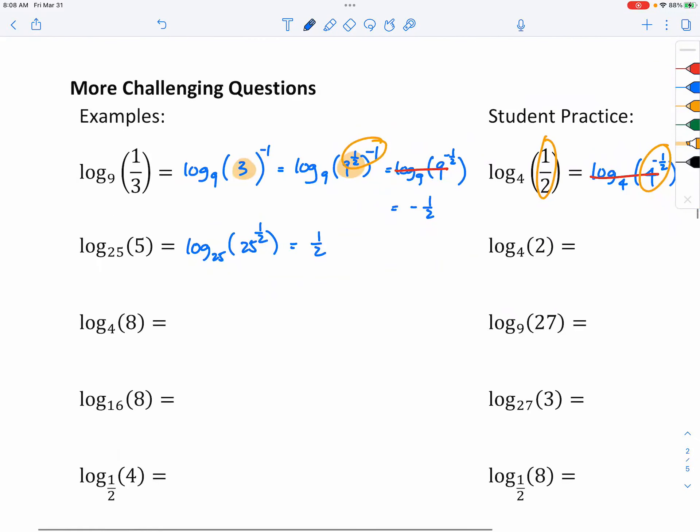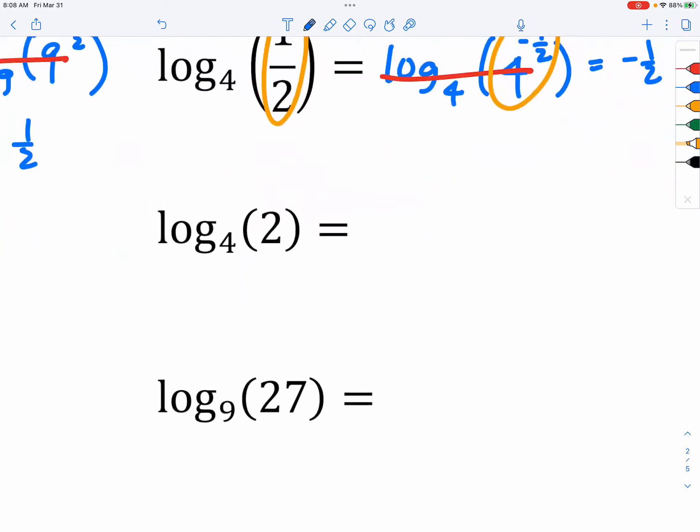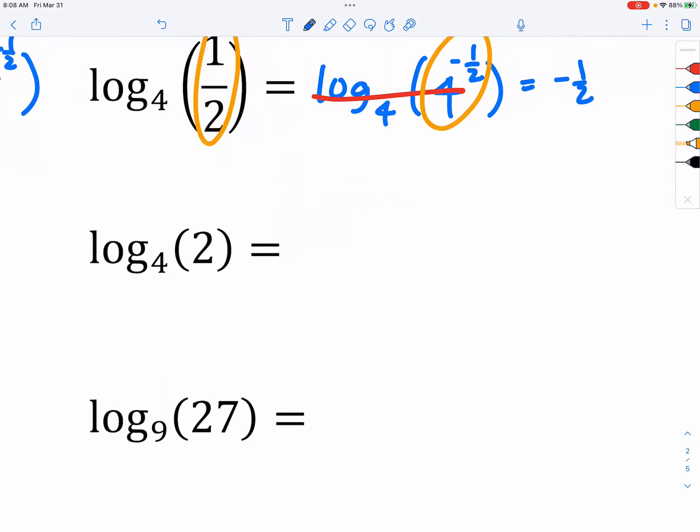Okay, so therefore, we can try this one. Now, log base 4 of 2, so you rewrite the 2 as 4 to the 1 half power, because square root is 1 half.